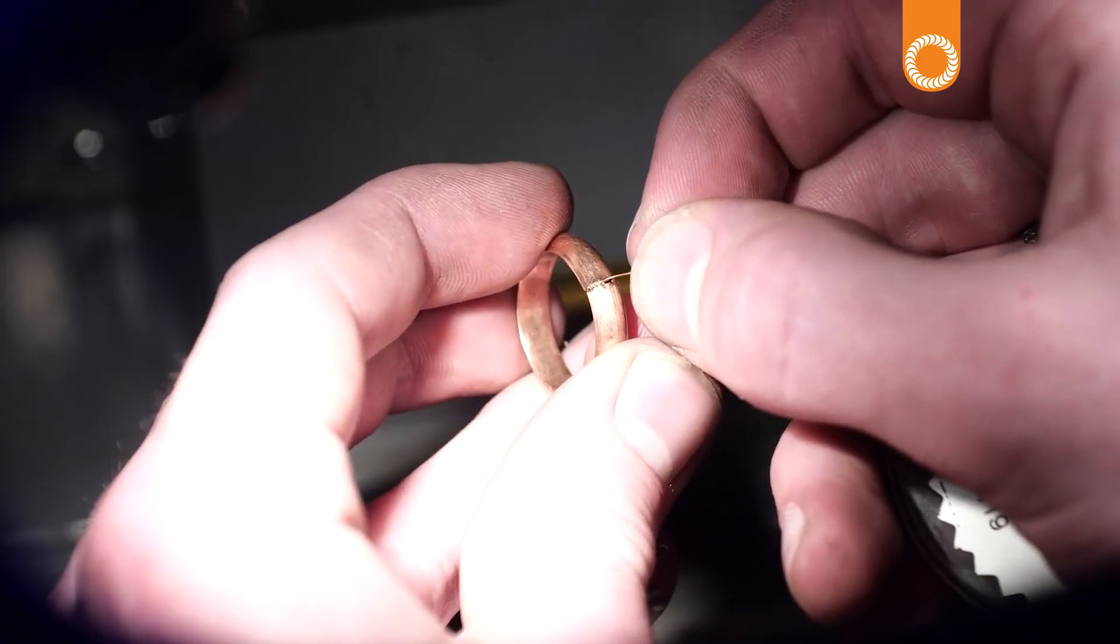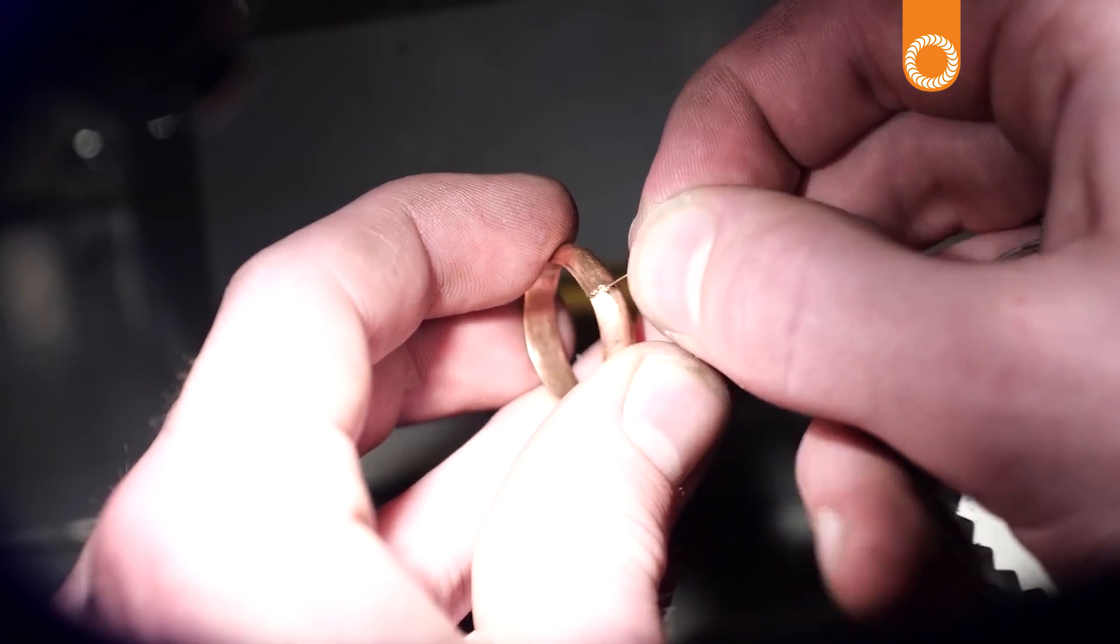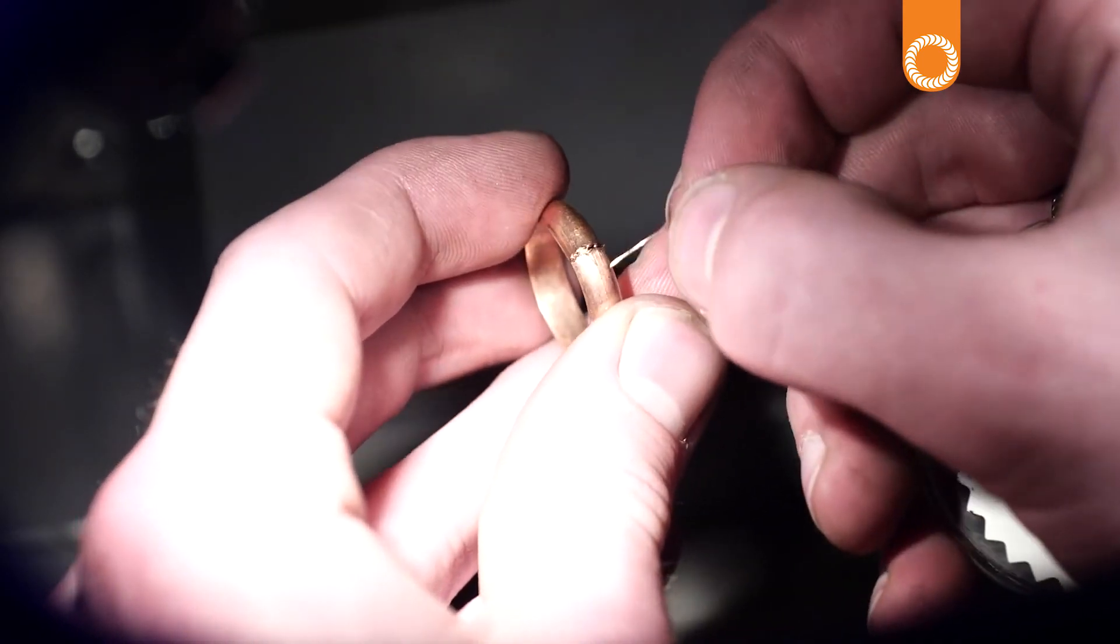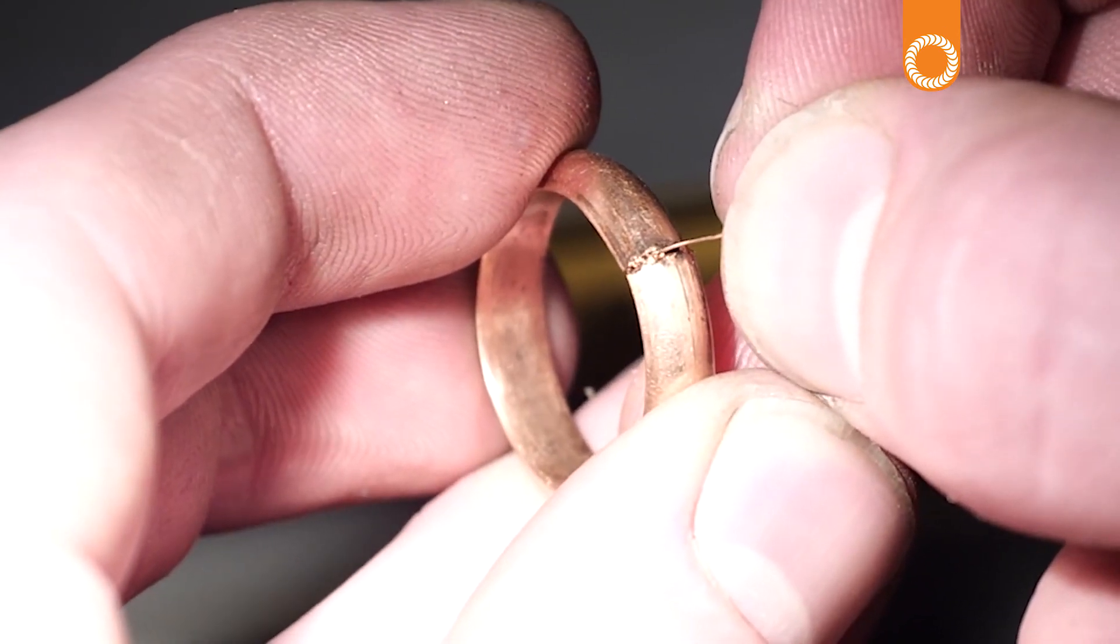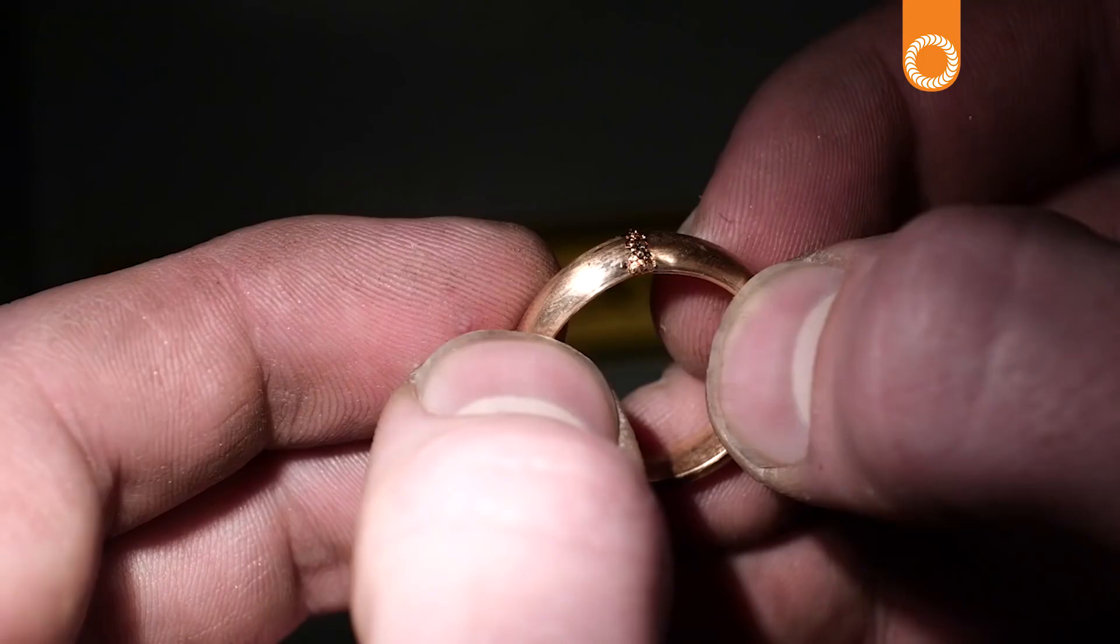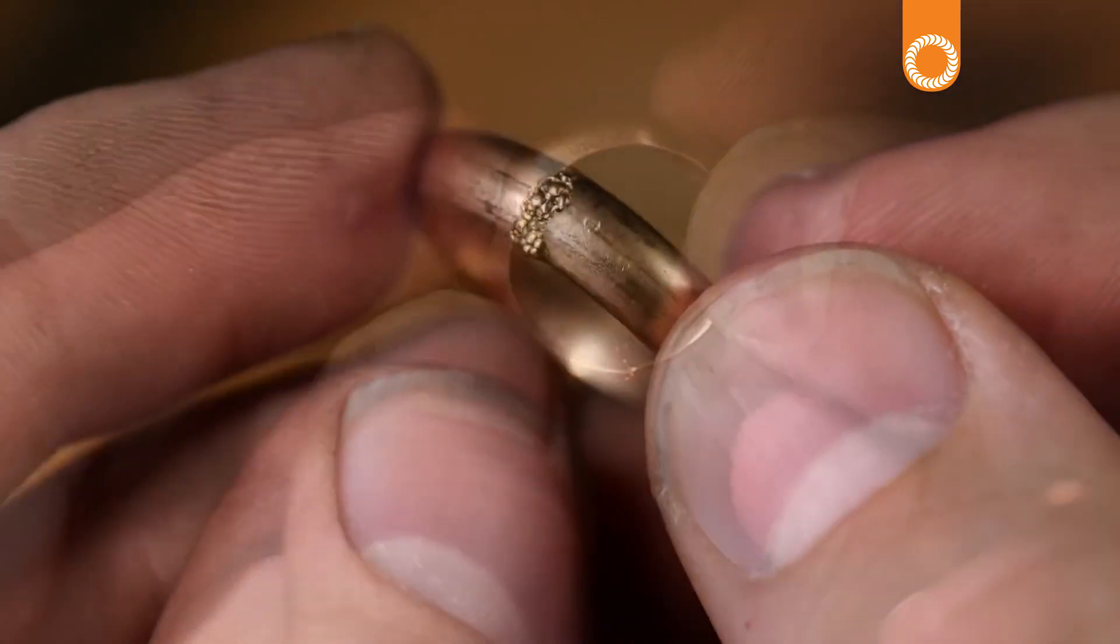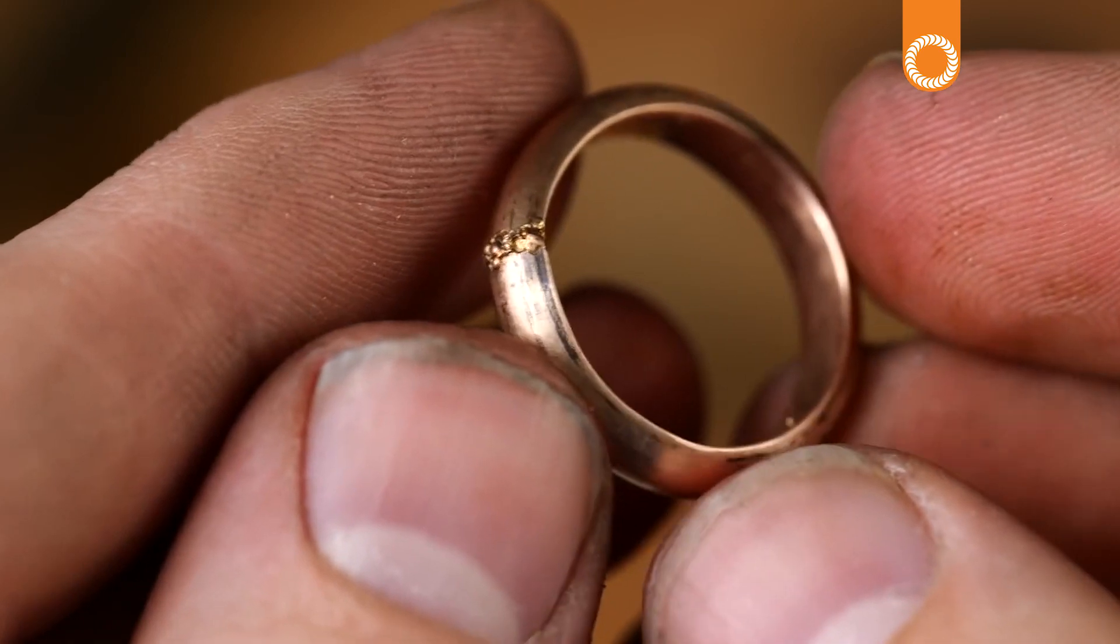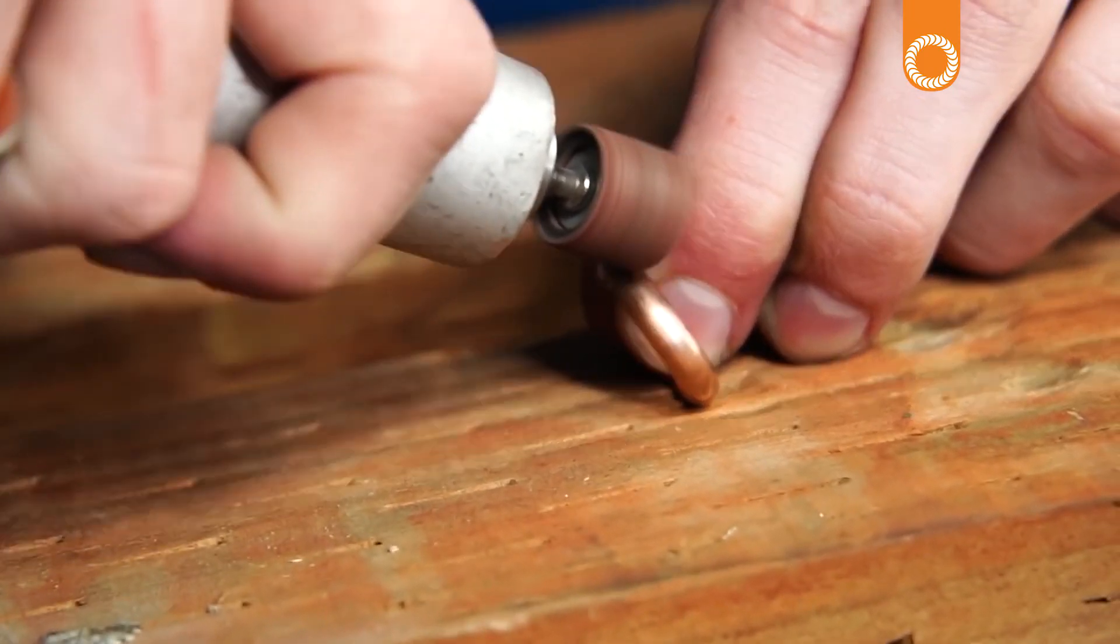Now I'll smooth down that laser welding joint, and then we can move on to the sanding and polishing steps. This is very straightforward—I'm starting with the inside first, going through all my different grits of sandpaper starting at 220 grit.